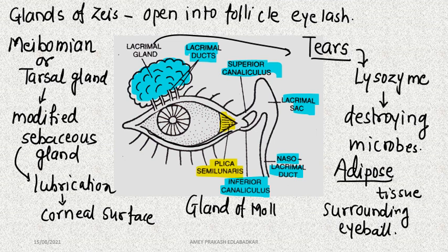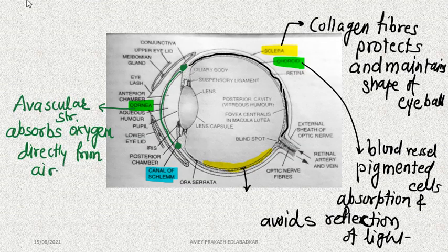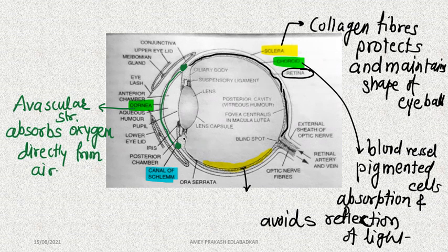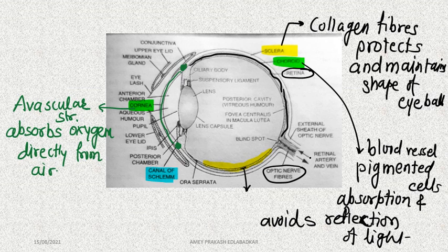Regarding the mechanism of vision — how an image is generated: light rays from an object pass through the conjunctiva, then through the cornea, through the pupil, onto the lens, and are focused on the retina to form the image. The nerve impulse then travels via the optic nerve to the visual area of the cerebrum, where the image is perceived. This concludes the structure and function of the human eye — in the next video we will study the structure of the ear.